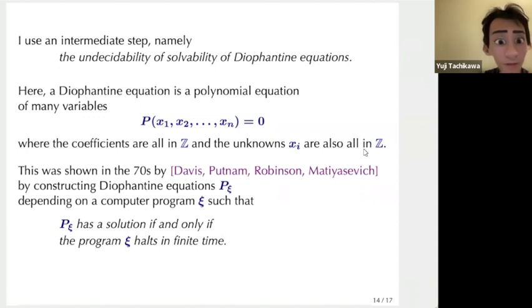So the fact that whether the Diophantine equation has a solution or not is undecidable was shown in the 70s by Davis, Putnam, Robinson and Matiyasevich by constructing Diophantine equations which depend on a computer program such that the Diophantine equation P_ξ has a solution if and only if the program halts in finite time. As the halting problem is undecidable, therefore the solvability of the Diophantine equation is also unsolvable.